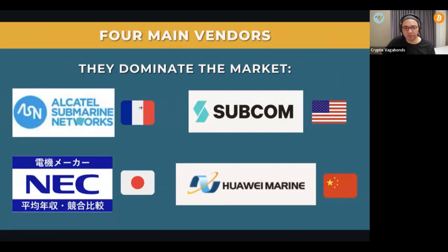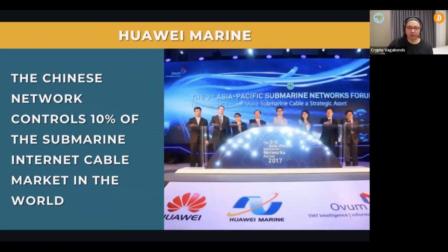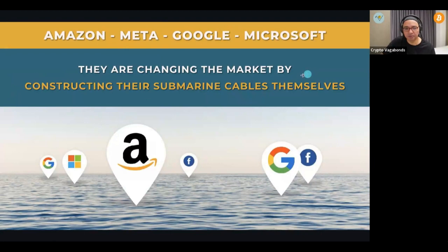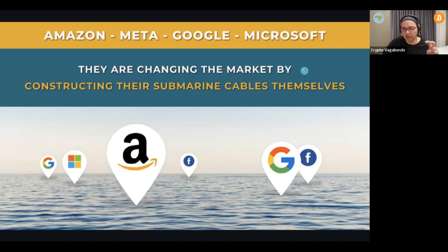Those cables are owned mainly by four companies: Alcatel (France), NEC (Japan), Huawei's Submarine (China), and SubCom (US). The Chinese network controls 10% of all submarine cables on the internet. Today, Amazon, Meta, Google, and Microsoft are becoming the largest owners of submarine cables and are constructing their own submarine grids. I haven't seen any of these companies yet seeking private security for those cables — I think they haven't yet recognized the cables as targets that need protection, but they should look at what China did to Taiwan.